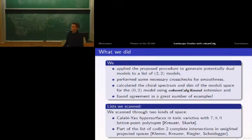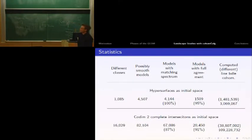We calculated the chiral spectrum and full dimension of the moduli space of both models and compared them. We found agreement in quite a great number of examples. The lists we scanned were: Calabi-Yau hypersurfaces in toric varieties with seven, eight, and nine lattice points from the Kreuzer-Skarke website, and codimension two complete intersections in weighted projective spaces.